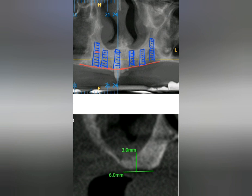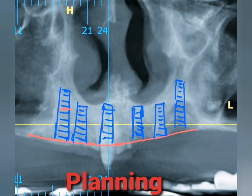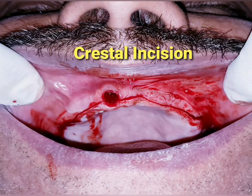We can choose different options: pterygoid implants, zygomatic implants, All-on-4, or basal implants. I selected pterygoid implants for this case. My plan is to place six implants anterior to the sinuses in the positions I have drawn in this CBCT picture, and two implants at the tuberosity to engage the pterygoid plate.